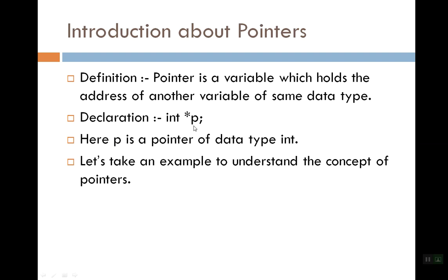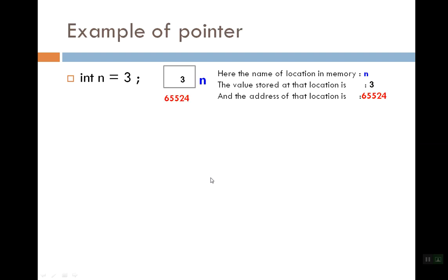So here you will see 'integer asterisk p' — here p is a pointer, and what is the data type? Integer. Now let's look at this concept with an example. This is a normal variable: n is equal to 3, which is the value. So here we can see that a variable is made, the memory location is 65524, its name is n, and its value is 3.